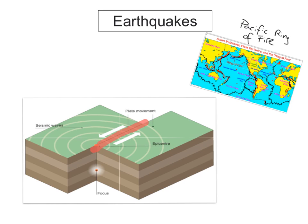There are a few key terms you need to know for your Junior Certificate examination. The focus is the place within the crust where the earthquake actually occurs. The epicenter is directly above the focus — it is the point on the surface above the focus. Seismic waves are the tremors sent out from the earthquake itself.